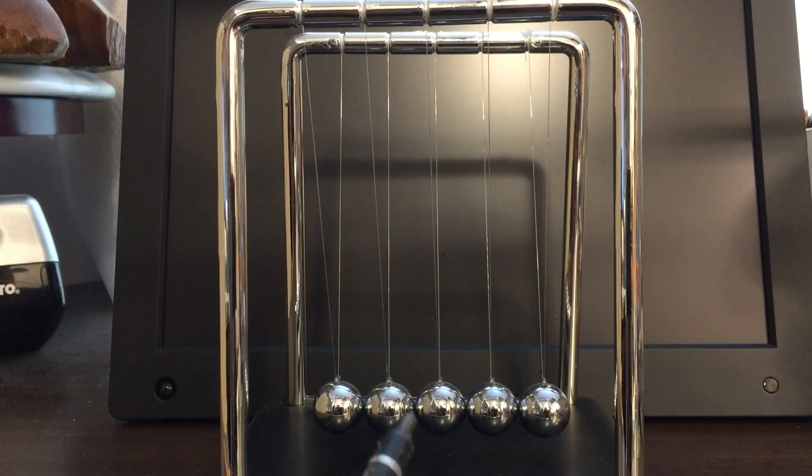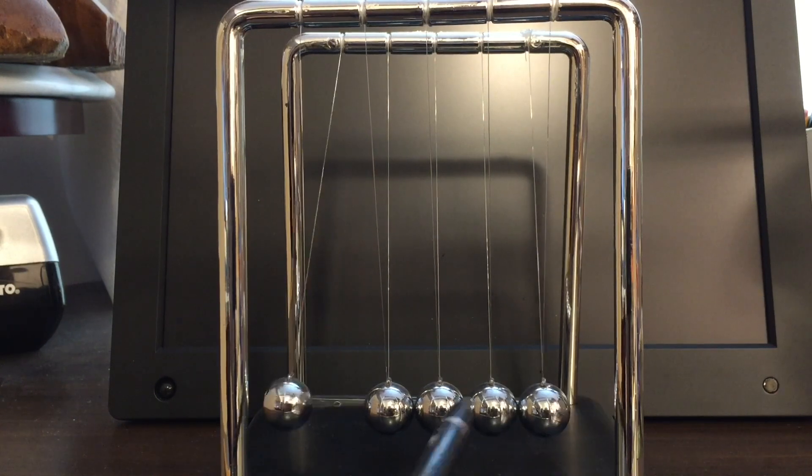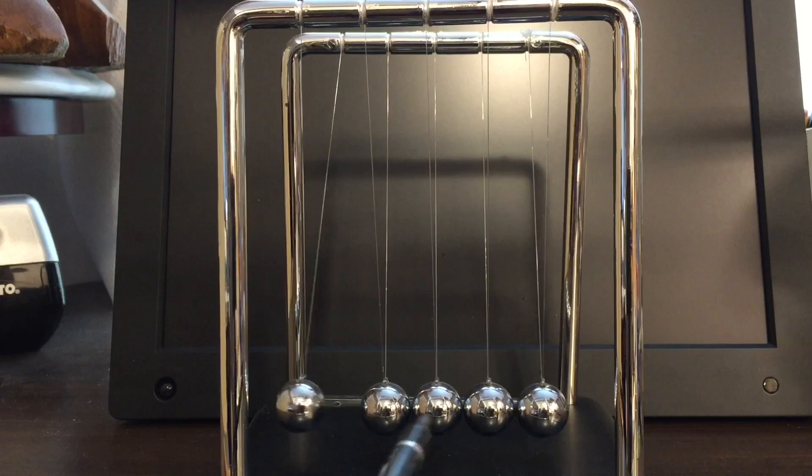This little device of suspended steel spheres is generally known as a Newton's cradle. They're all the same size and mass. We're going to give it a little try here, a little push. It's great for showing the conservation of momentum.